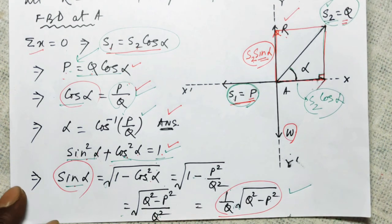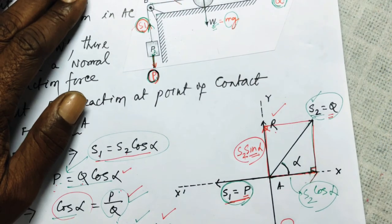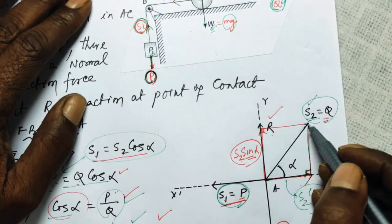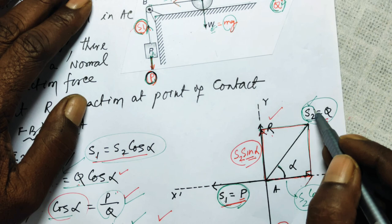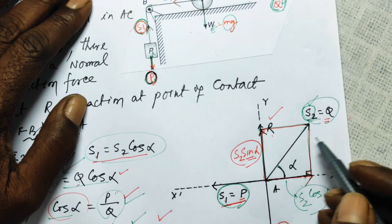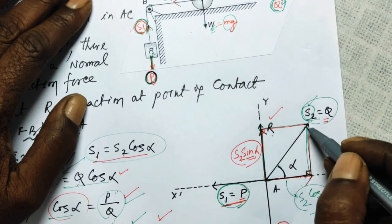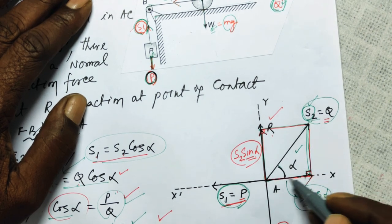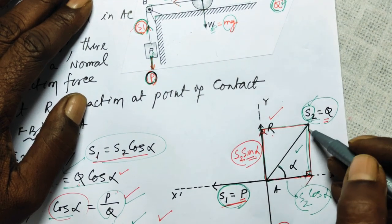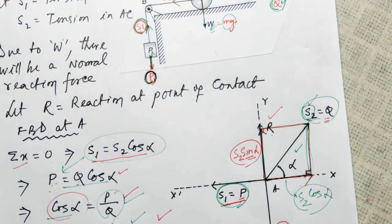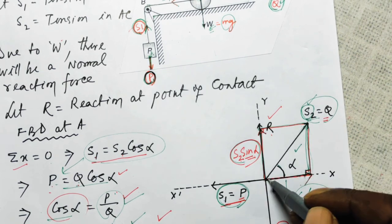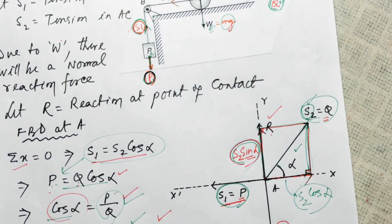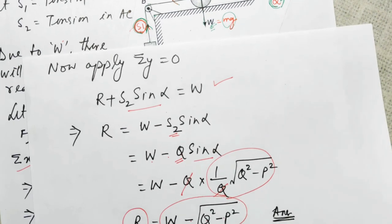Now to make sigma Y equals zero: from the tip of the S2 vector, dropping a perpendicular gives the component of S2 along the positive y-axis. In this triangle, sin alpha equals perpendicular over hypotenuse, and cross-multiplying gives this component as S2 sin alpha. So let us apply sigma Y equals zero.